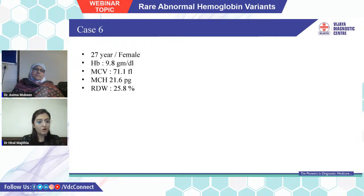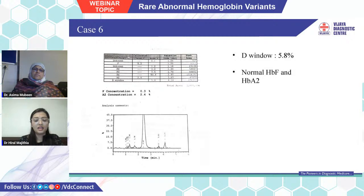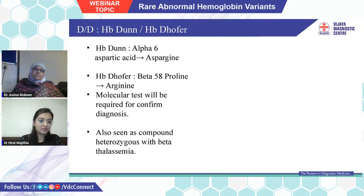Case 6: a 27-year-old female with hemoglobin 9.8 g/dL, MCV 71.1, MCH 21.6, RDW 25.8%. We got a D window of just 5.8% with normal HbF and HbA2. Differential diagnoses were hemoglobin DUN (alpha gene variant) and hemoglobin DOFER (beta gene variant). Molecular testing will confirm the diagnosis, and it can be seen as compound heterozygous with beta thalassemia.